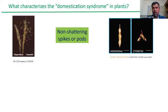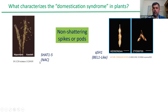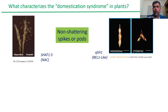Another very important thing is that in the case of plants, some of the genes behind the traits have been identified. In the case of rice, this non-shattering character is related to a NARC transcription factor, and in the case of soybean it is a BELL-like protein. I want to reinforce the idea that such a complex trait, selected in the past, can be resolved into a monogenic Mendelian character.